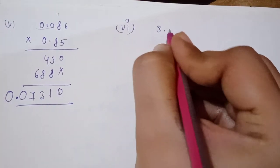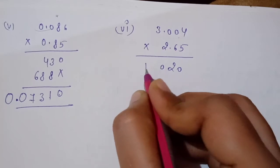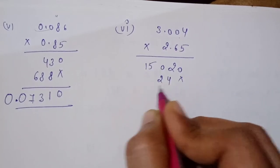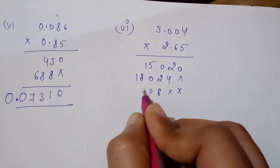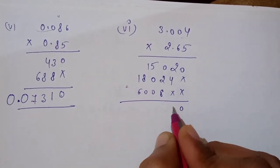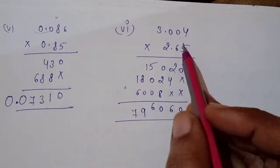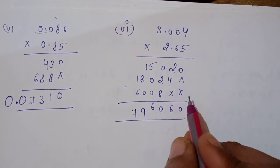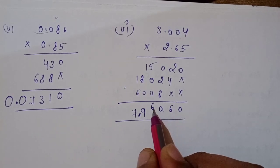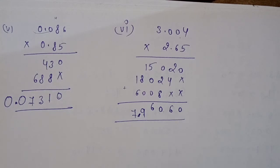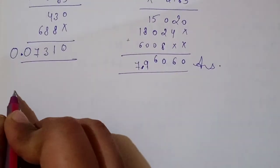Now 3.004 × 2.65. Multiply the numbers. Add: 0, 6, 10, 6, 7. Count decimal places — one, two, three, four, five. Count from the right: one, two, three, four, five — place the decimal there. This will be the answer. Multiplication of decimals is straightforward — just place the decimal at the end by counting.